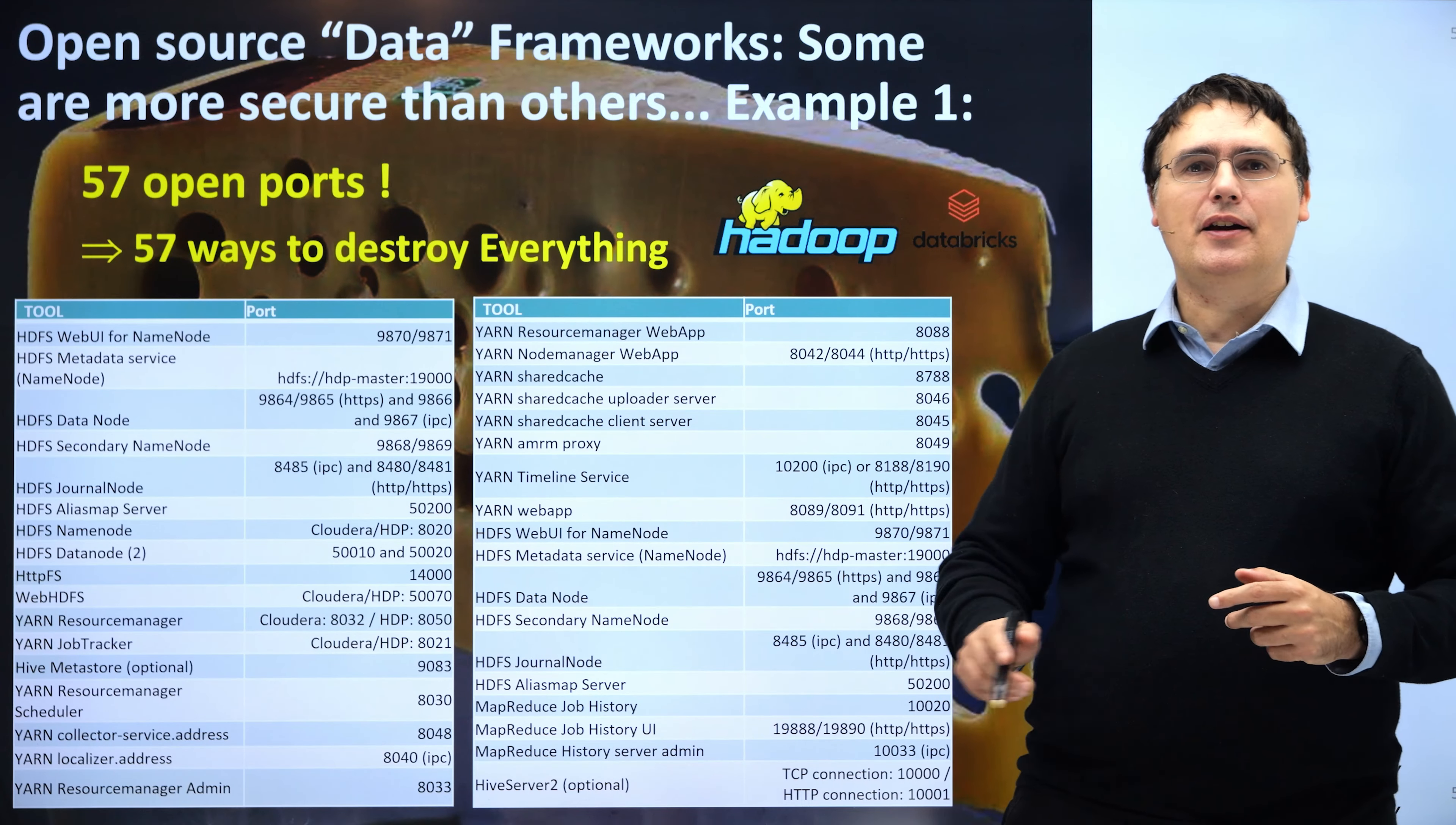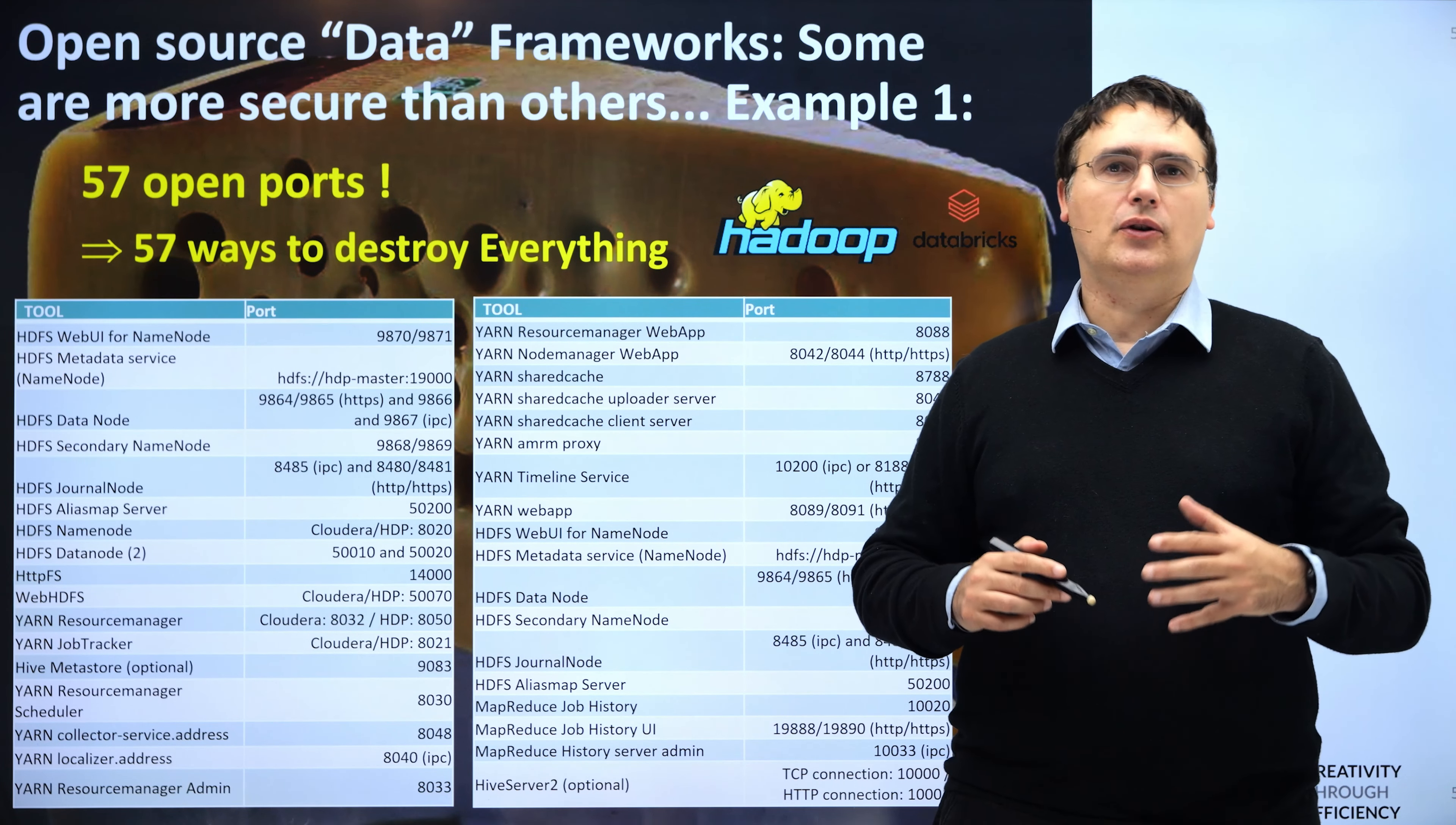That's why you have to secure and close your server as much as possible to avoid any intrusion with firewalls everywhere. Unfortunately, as far as security is concerned, it's a bit of a failure with Hadoop and Databricks systems. Because these systems force you to open no less than 57 IP ports on your servers. You might as well say that your security becomes a real Swiss cheese with holes all over the place. It's the Hadoop Swiss cheese.